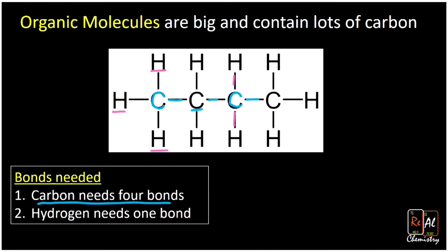Now, what about hydrogen? Hydrogen needs one bond — that's another important thing to remember. Hydrogen just needs one bond and it's totally happy. So keep those in mind as we take a look at line-angle structures.